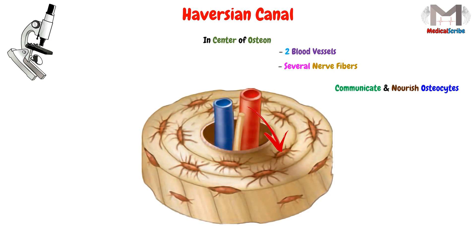You know that the osteon has many osteocytes within it. These osteocytes will be nourished and communicated with through these Haversian Canals, and the nourishment and the communication occur through the connections between the canal and the osteocytes.